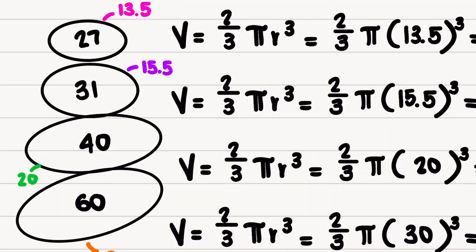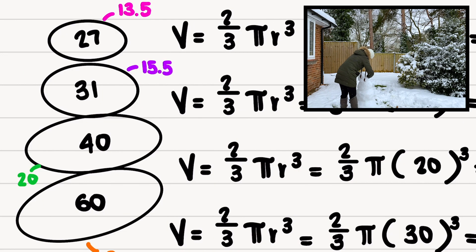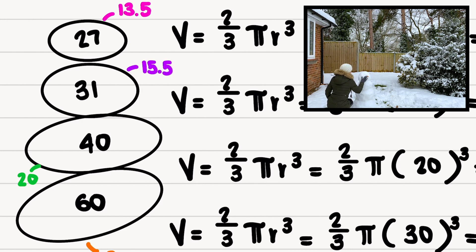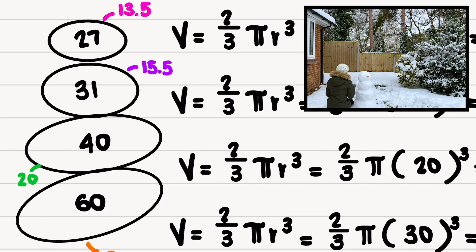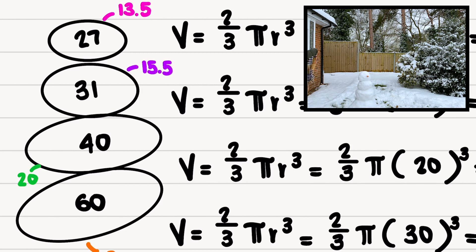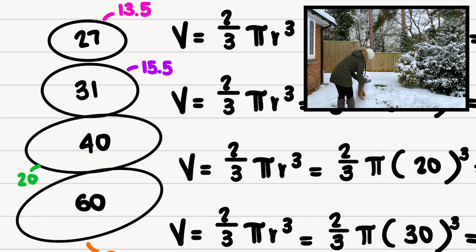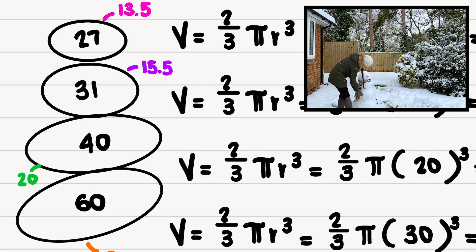I made Harry four layers deep, so I measured the diameter of each of the layers. I have 27 for his head, 31, 40, and 60 for his base. However, I need the radius, so I halved each of the diameters.